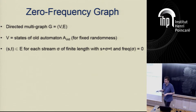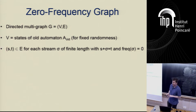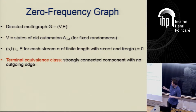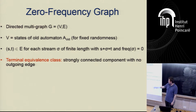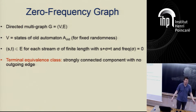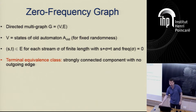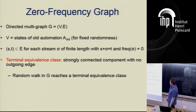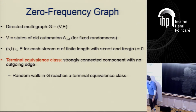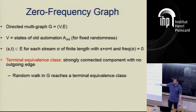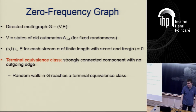I look at the strongly connected components of this directed multigraph, and identify those strongly connected components that have no escaping (outgoing) edge — I call those terminal equivalence classes. It's not hard to see that a random walk in G will eventually reach a terminal equivalence class of long enough length. Each step in the walk is a zero-frequency stream — a long sequence of updates with net frequency zero.